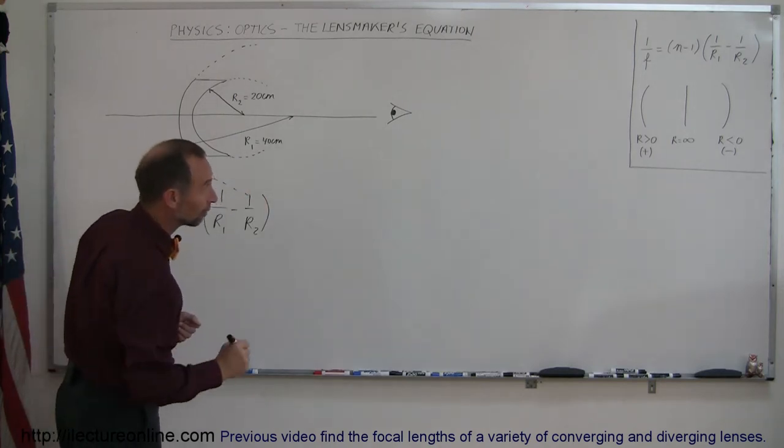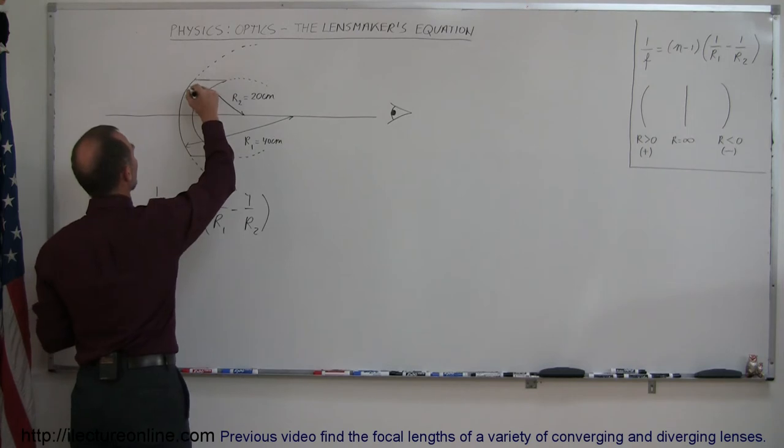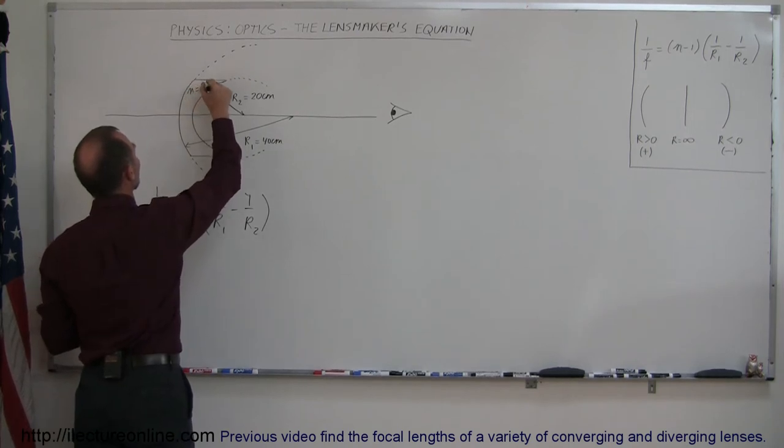And that's the equation that I have up there as an example. So n would be the index of refraction of the lens, and let's say it's equal to 1.5.